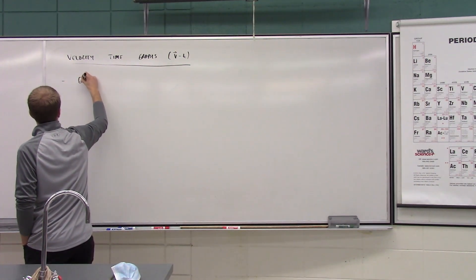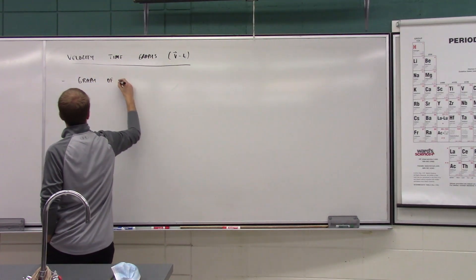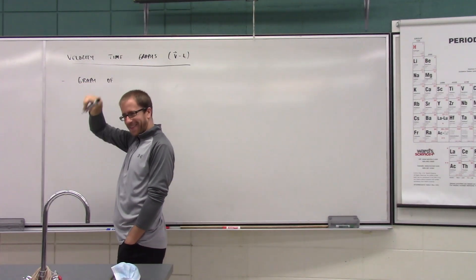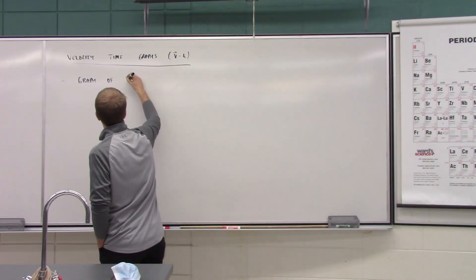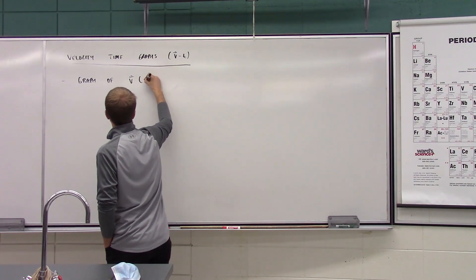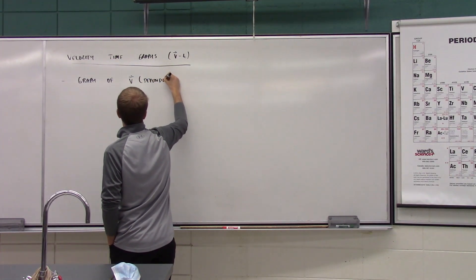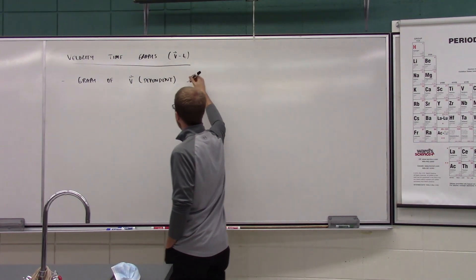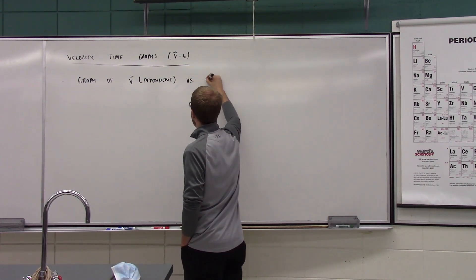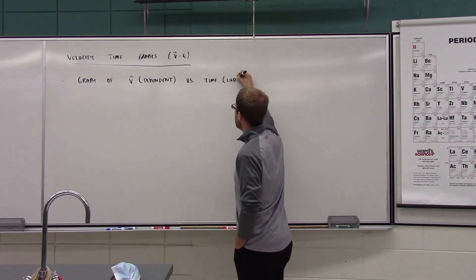The independent variable is time. So it's going to be a graph of your velocity, which is the dependent variable, found on the y-axis, versus time, which is the independent variable on the x-axis.